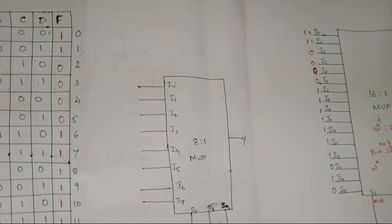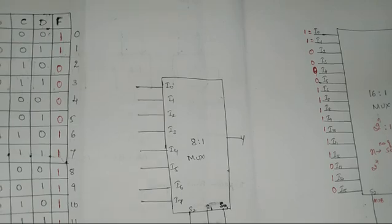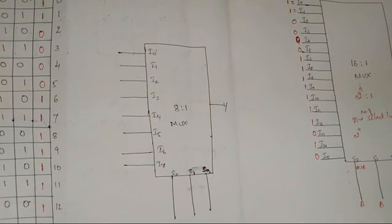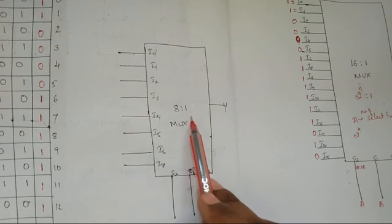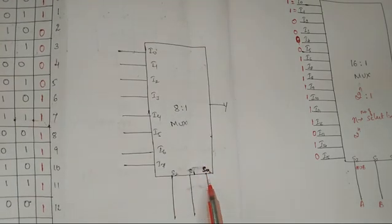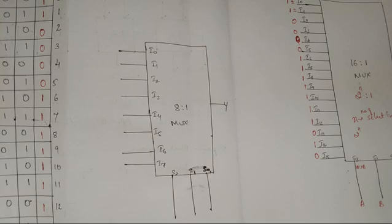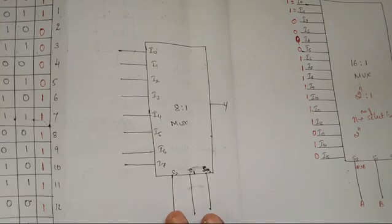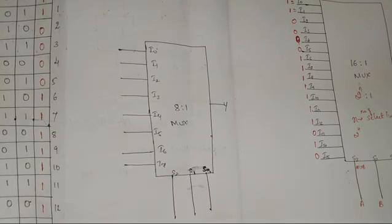Now we will look at the implementation of the same problem using an 8-to-1 multiplexer. The 8-to-1 MUX has three select lines, and I will explain its solution in the next video. Thank you for watching — if you have any doubts please let me know in the comment section. Happy learning, and all the very best for your exams. Do share this video with your friends.